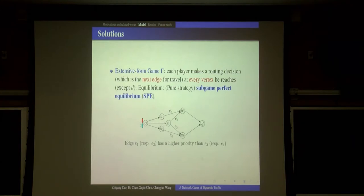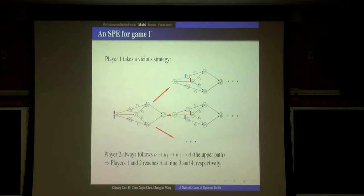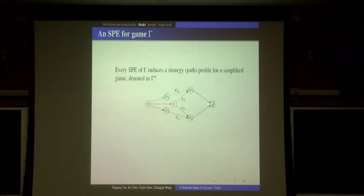We also assume that edge E1 has higher priority than E3, edge E2 has higher priority than E4. Player one's strategy is like this: he first chooses edge E1. When he arrives at O, if he finds player two uses this edge, then he will choose this edge. Otherwise he will always choose this edge. Player two's strategy is like that: he will choose the upper edge and then follow it to D. So it's easy to check this is a sub-game perfect equilibrium strategy of this extensive form game. No player can be better off by unilaterally changing his strategy, and player two will arrive one time later than player one to arrive at D.